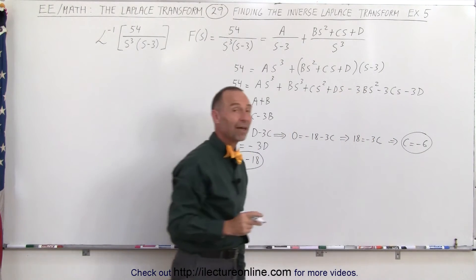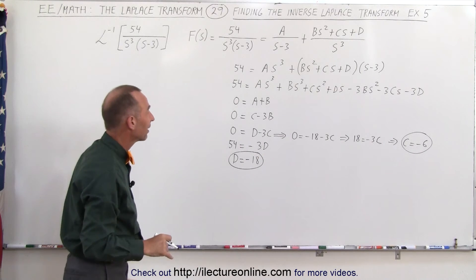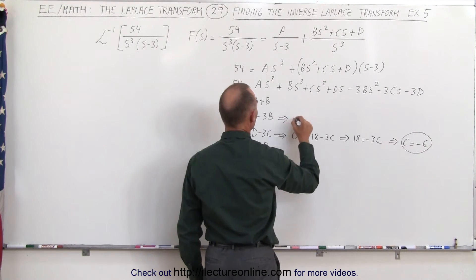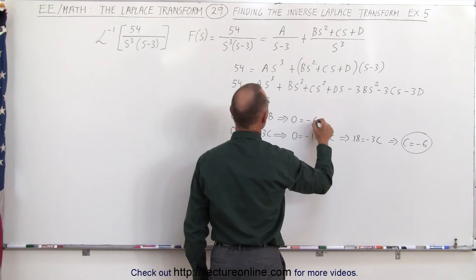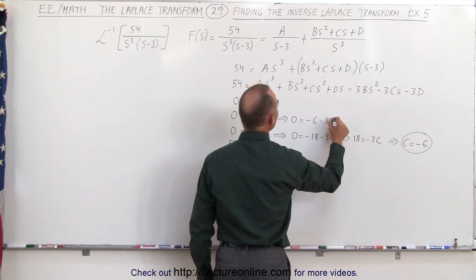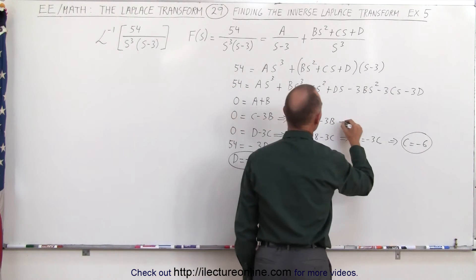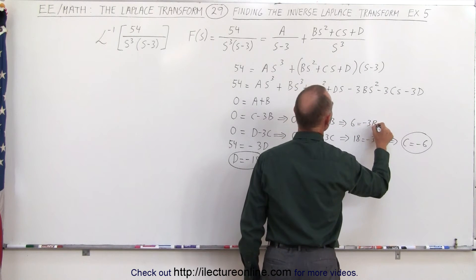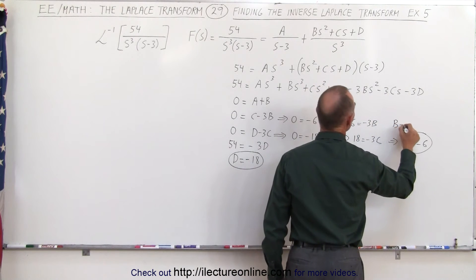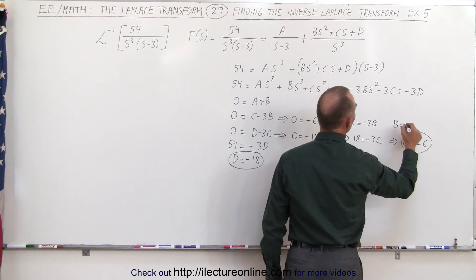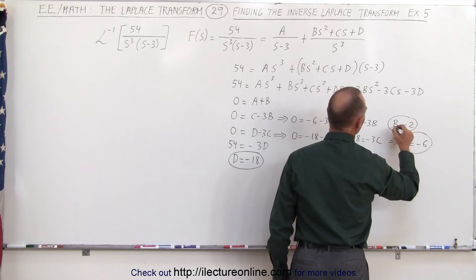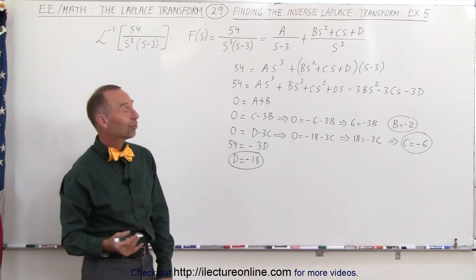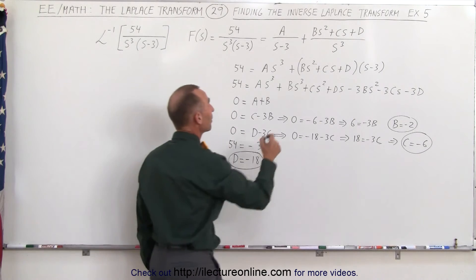All right, now we have both d and c. Now let's find b: 0 is equal to minus 6 minus 3b. Moving 6 across, that means 6 is equal to minus 3b, which means b is equal to minus 2. And finally, since a plus b equals 0, if b is minus 2 then a must be plus 2.